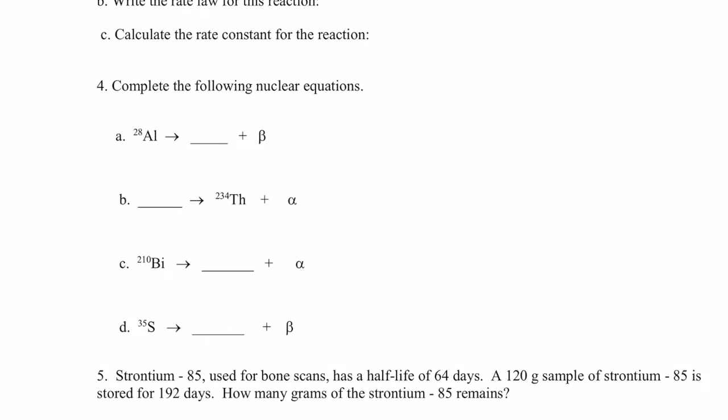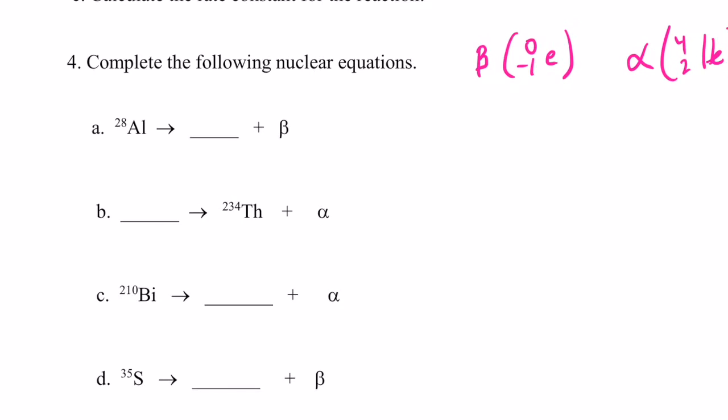So whenever we see a beta emission, remember we symbolize that oftentimes with a 0 over negative 1e in our nuclear equations, and alpha would be 4 over 2He. Okay, so it looks like in the first example we have aluminum-28.